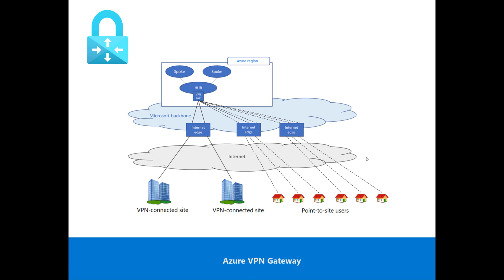There are different SKUs for Azure VPN Gateway. Depending on the SKU chosen, Azure VPN Gateway supports between 10 and 30 site-to-site connections, from 100 megabytes to 1.2 gigabytes of aggregated throughput, and Border Gateway Protocol (BGP) support.